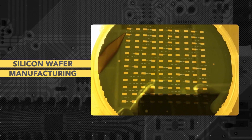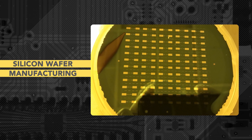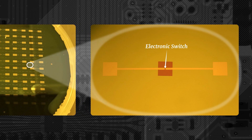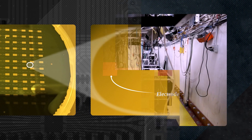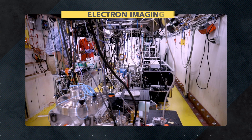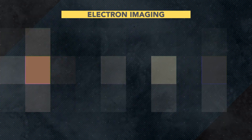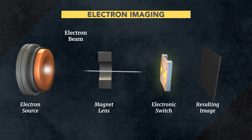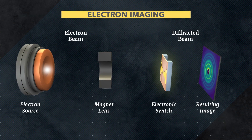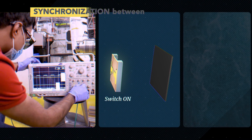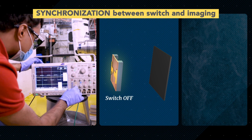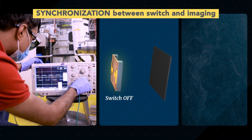The first is our ability to custom-make state-of-the-art electronic devices which can be operated millions of times. The second is the ultra-fast electron diffraction source at SLAC, which produces really short pulses of electrons which can fly through materials and take photographs of their atomic structures. And the third ingredient is a synchronization scheme that brings these components together.